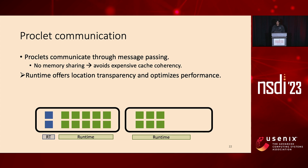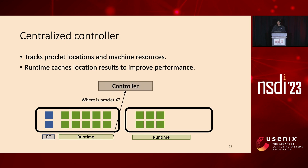To efficiently support proclet communication, we build a runtime that offers location transparency and optimizes performance. Based on the location of proclets, the runtime transparently adopts different communication mechanisms: when there is remote communication, the runtime uses an RPC call; when there is local communication, the runtime uses a function call instead, to avoid expensive RPC overhead. Proclet communication also relies on a logically centralized controller which tracks proclet locations and machine resources, answers location-resolving requests from runtimes, while runtimes cache location results to move the controller off the critical path.